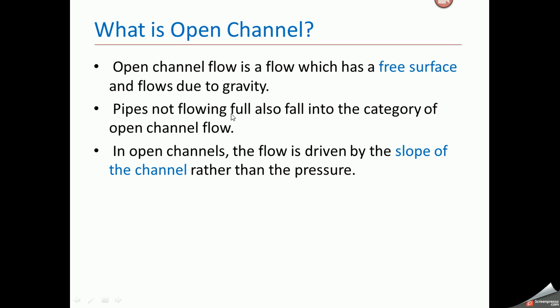Second point: a pipe not flowing full also falls into the category of open channel flow. In most cases, if the pipe diameter is large and water fills only half the depth, atmospheric pressure also acts. Third point: in open channel, the flow is driven by the slope of the channel rather than pressure — meaning the difference in elevation between sections.